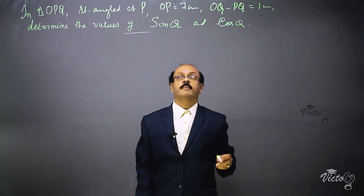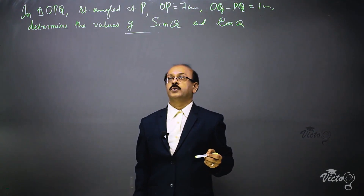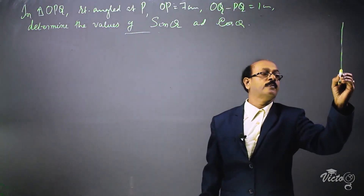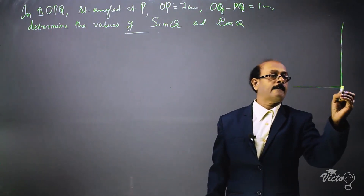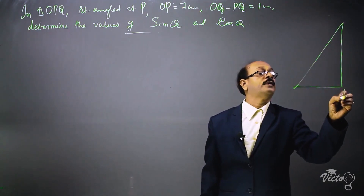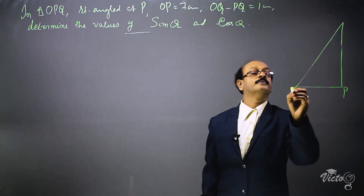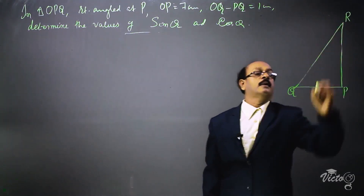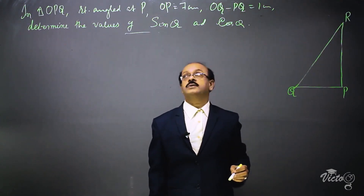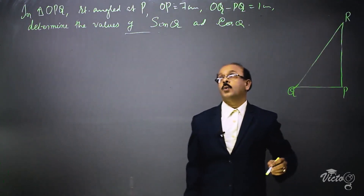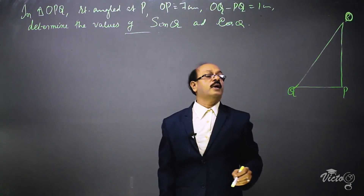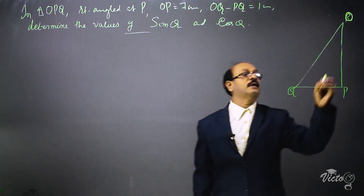We have to draw a figure with the given information. In triangle OPQ, it is right-angled at P. So the right angle is at P. Drawing the triangle: it is O, P, Q — triangle OPQ.